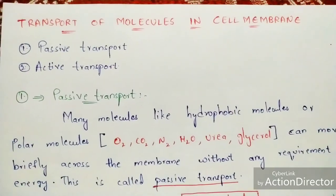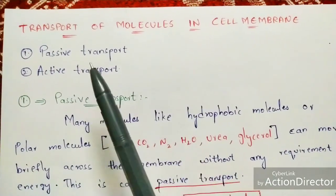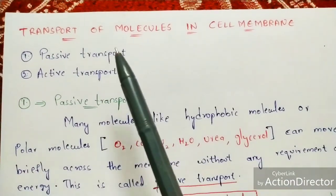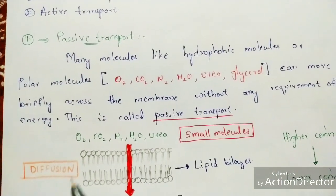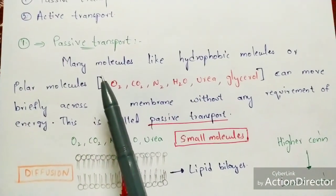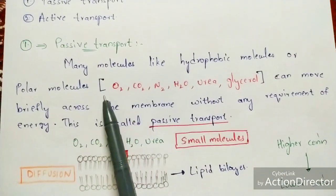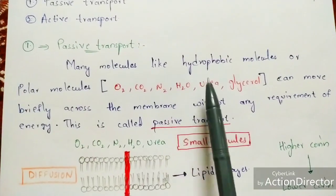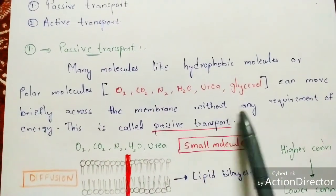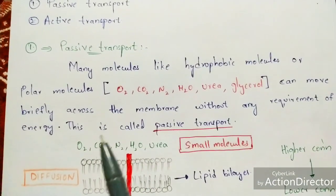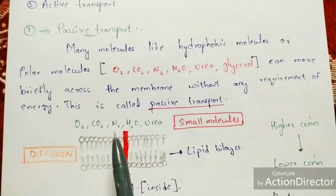Transport of molecules in the cell membrane occurs in two types: passive transport and active transport. In passive transport, molecules such as hydrophobic molecules or polar molecules — like oxygen, carbon dioxide, nitrogen, water, urea, and glycerol — can move across the cell membrane without any requirement of energy.